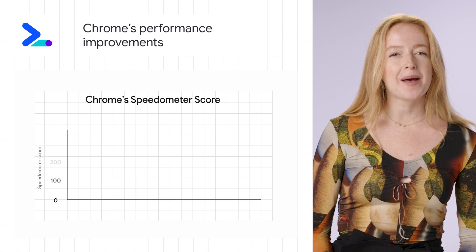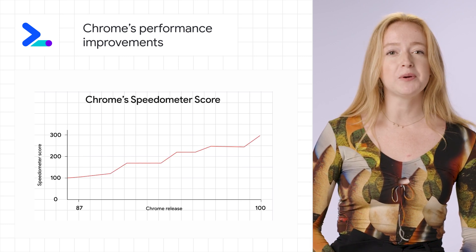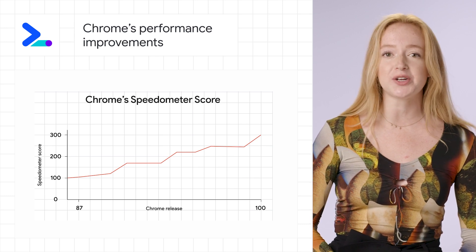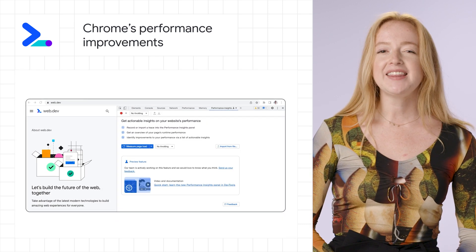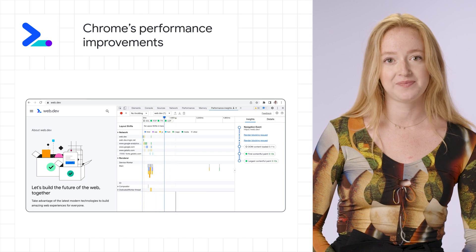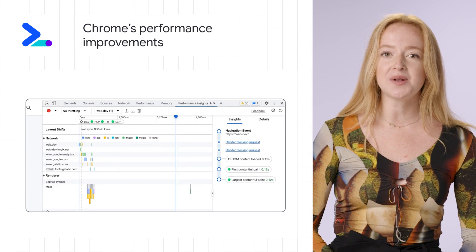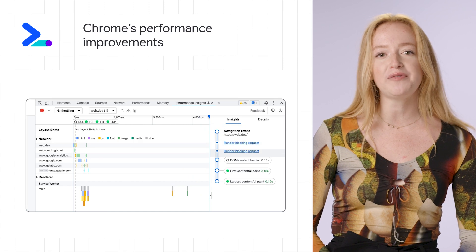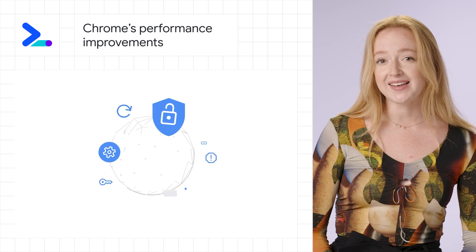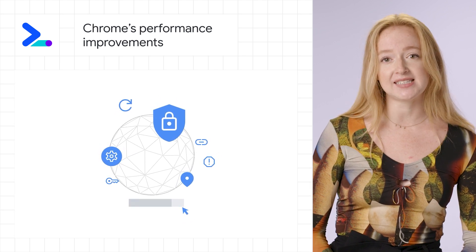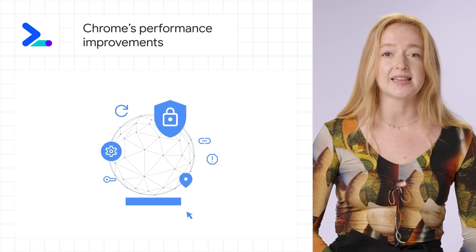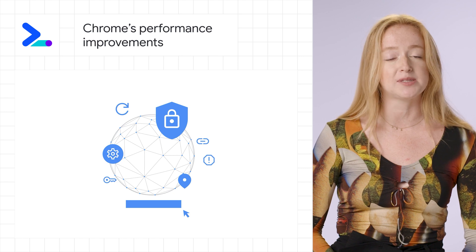Up next is Web, where you can find updates to Chrome's performance improvements, which translate to faster experiences for you and your users. In the latest Chrome release, you can also find a new Performance Insights panel in DevTools. It provides contextual guidance right in your code on improving your vitals, making it a great companion to Web. We're also working on the Privacy Sandbox to rethink online privacy and enable personalized experiences that don't rely on tracking users across apps or sites.